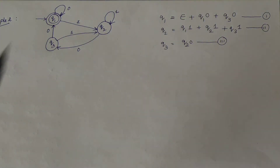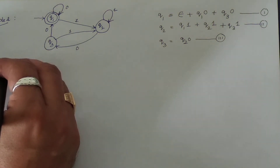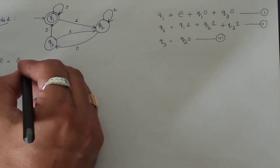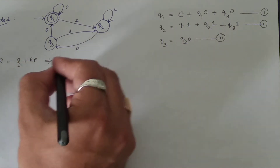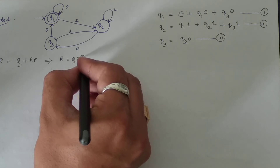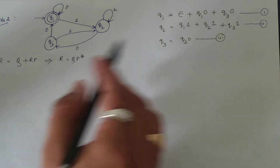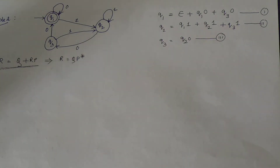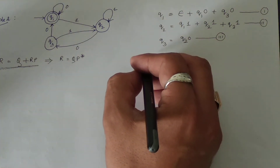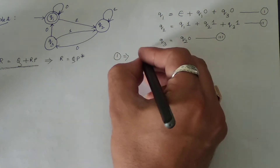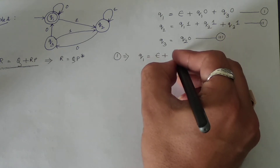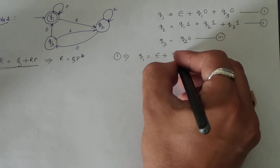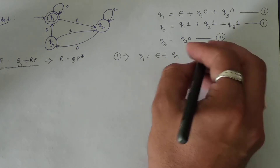We concentrate only on the final state, which is q1. Arden's theorem states that if we have an equation of the form R = Q + R·P, it has a unique solution R = Q·P*. So from equation number one: q1 = ε + q1·0 + q3·0. I need q1 on the right-hand side, so I keep q1·0. Replacing q3 by q2·0 (from equation 3) gives q1 = ε + q1·0 + q2·00. I mark this as equation number four.